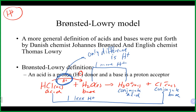H₃O⁺ is a conjugate acid in this case — it is the conjugate acid to water, which is the base. Water accepts H⁺, and the result of accepting H⁺ turns it into H₃O⁺, which is the conjugate acid.